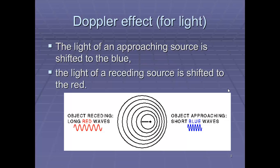We know that the light of an approaching source is shifted to the blue, and the light of a receding source is shifted to the red. So again, this is something which we've observed, and this is the Doppler effect for light.